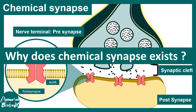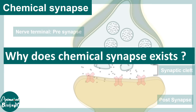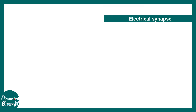Now let's talk about why chemical synapses even exist. Chemical synapses have a slow transmission velocity, so why should one bother with chemical synapses? The answer is that chemical synapses are highly modulatory.